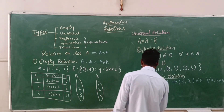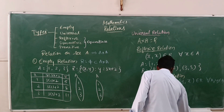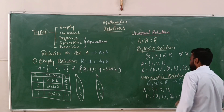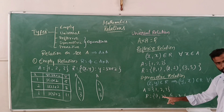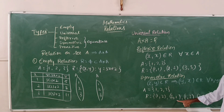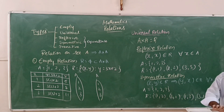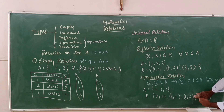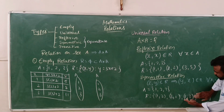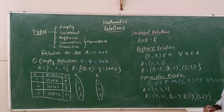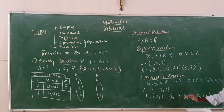Let us take the same example: A = {1, 2, 3} and R = {(1,2), (2,1), (1,3), (3,1)}. We have (1,2), so we should also have its opposite (2,1) — and we do. We have (1,3), so we should also have (3,1) — and we do. If (3,1) were missing, we could not call this relation symmetric, because (x,y) is there but (y,x) is not. Symmetric relation means whenever we have (x,y), we must also have (y,x).